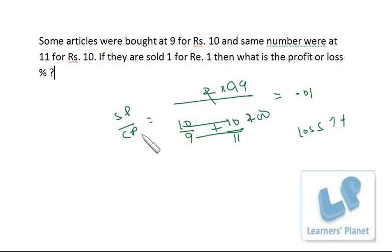Because cost price is 100 rupees and selling price is 99 rupees. That means the loss is 1 rupee, that means on 100, 1 rupee is 1%. So I hope that's clear to you.